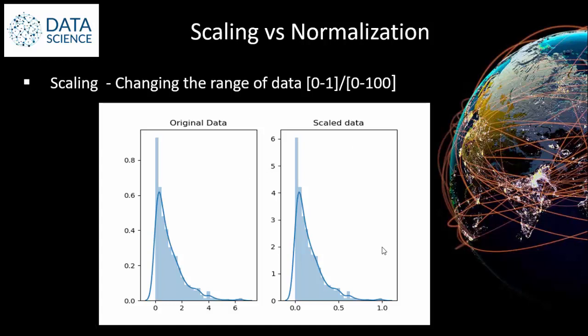But you may think: why do we have to do this? By scaling your variables, you can help compare different variables on equal footing. For example, two columns — one for weight and another for height — have totally different units. But if you want to compare those two columns, bringing them under a common scale will help us analyze the data very easily.